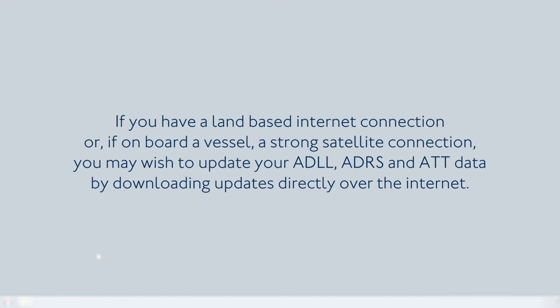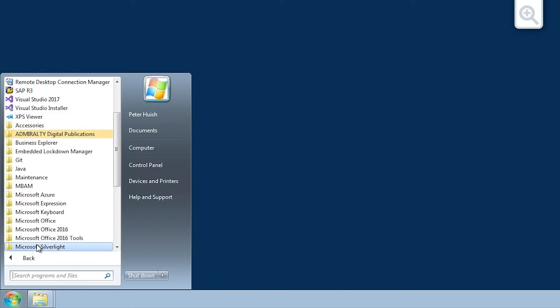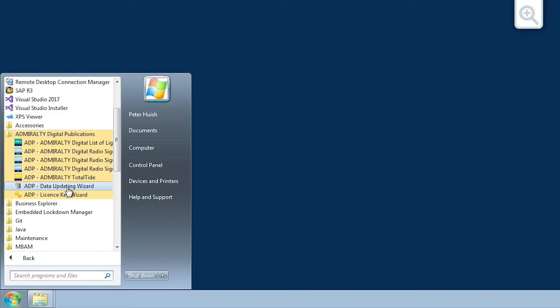If you have a land-based internet connection, or if onboard a vessel, a strong satellite connection, you may wish to update your ADLL, ADRS and ATT data by downloading updates directly over the internet. To do this, open the ADP Data Updating Wizard through the Start menu or desktop of your computer.